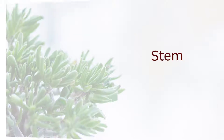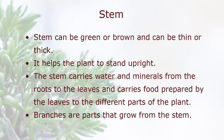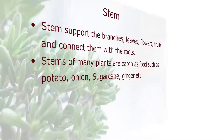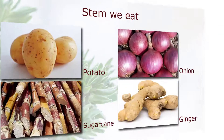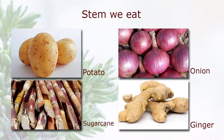Stem. Stem can be green or brown and can be thin or thick. It helps the plant to stand upright. The stem carries water and minerals from the roots to the leaves, and carries food prepared by the leaves to the different parts of the plant. Branches are parts that grow from the stem. Stems support the branches, leaves, flowers, and fruits, and connect them with the roots. Stems of many plants are eaten as food, such as potato, onion, sugarcane, and ginger.